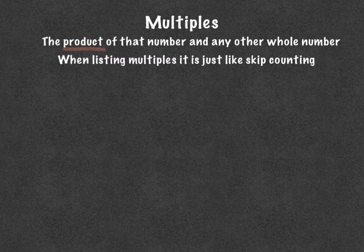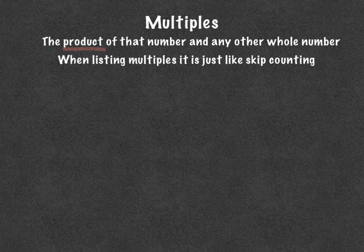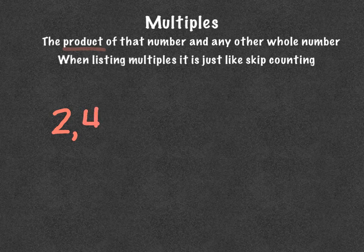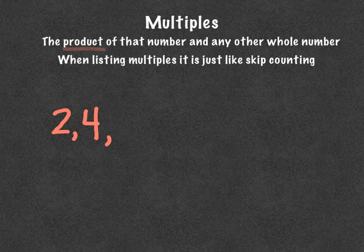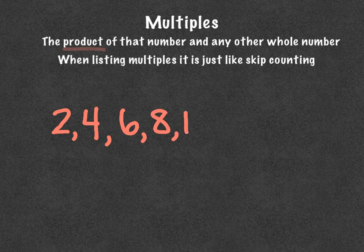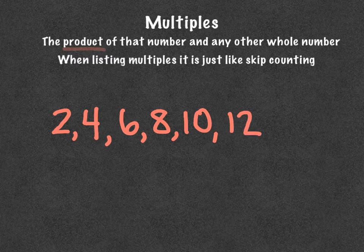Basically when you're listing multiples, it's like skip counting. So if I was going to do the multiples of two, I would start with two and then put a comma to separate it from the next one. Four, because two times one is two, two times two is four, two times three is six, two times four is eight, two times five is ten, two times six is twelve, and then you keep going.